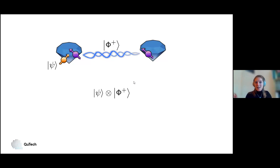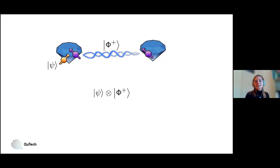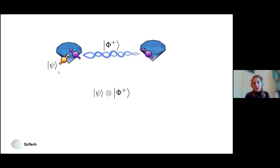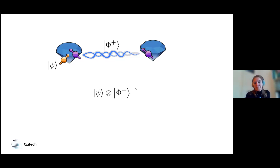Let's imagine that you are an experimentalist in the lab and you have two nodes. On these nodes, you have communication qubits and memory qubits. These two nodes share an entangled pair of qubits, and you have an extra arbitrary qubit state. This is something that, at least to me, is not super fancy anymore in the lab, but you can write it in this mathematical way.